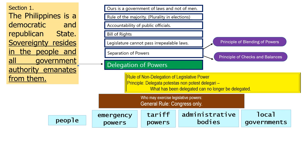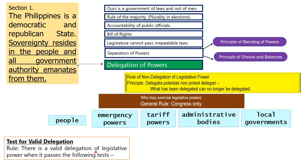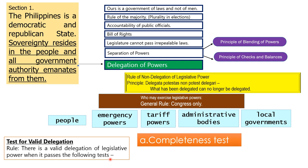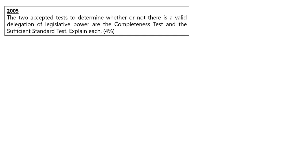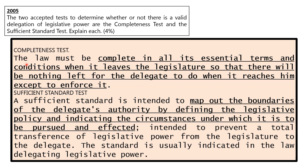Still on delegation of legislative power: there is a valid delegation when it passes two tests. Number one is the completeness test, and number two is the sufficient standard test. The 2005 bar exam explained both. From the word itself — completeness — the law must be complete so that when it leaves the legislature, there is nothing left for the delegate to do except to enforce it. For the sufficient standard test, the law should map out the boundaries of the delegate's authority by defining the legislative policy and indicating the circumstances under which it is to be pursued and effected.